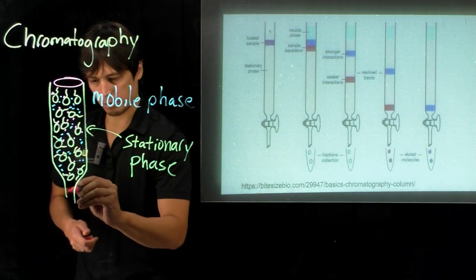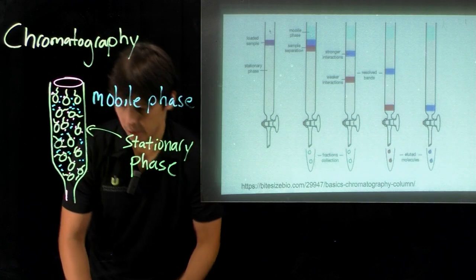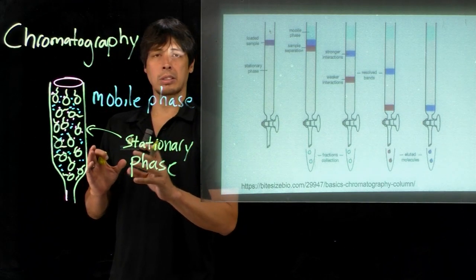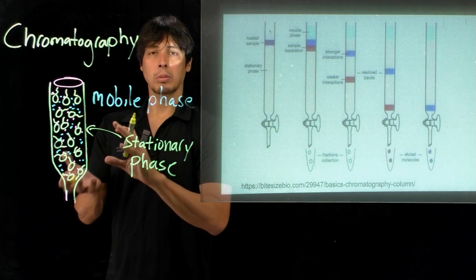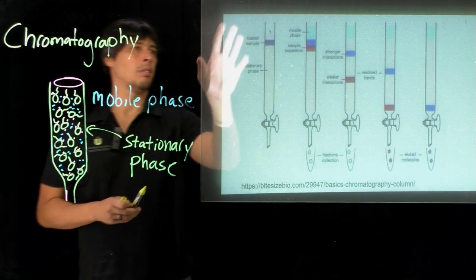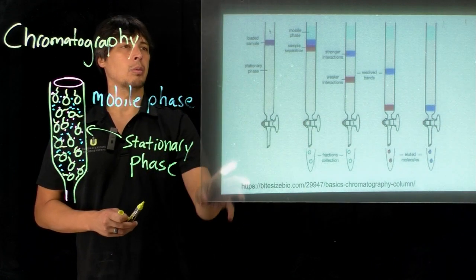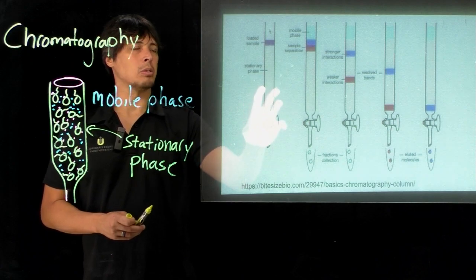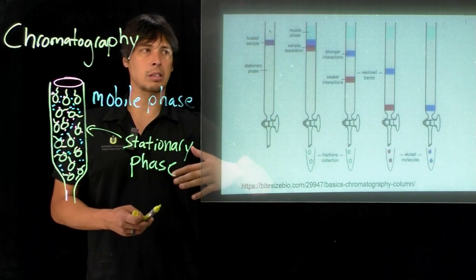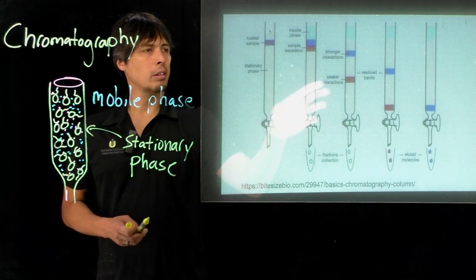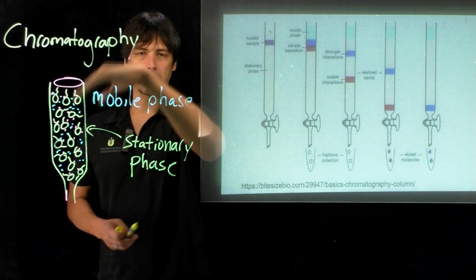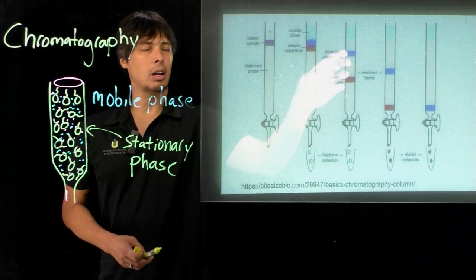What we're looking for is through the interactions of proteins with the stationary phase, we can separate out proteins. For instance, in this slide on the right, we see our loaded sample goes through. We add mobile phase to help push the sample through. Things that interact very weakly with the beads are going to progress through the column much faster than